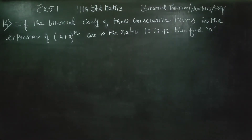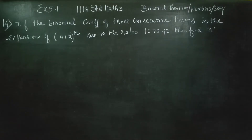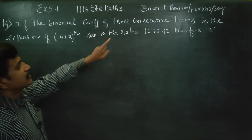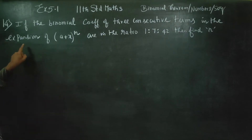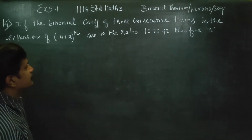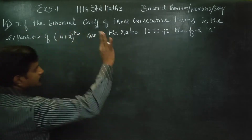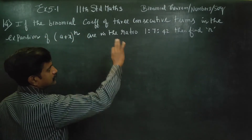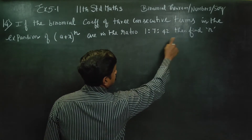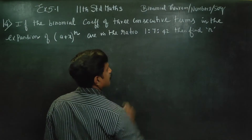Dear 11th Standard Students, I am Etro Karanagaran. In exercise number 5.1, sum number 14, if the binomial coefficient of 3 consecutive terms in the expansion are in the ratio 1:7:42, then find the value of n.